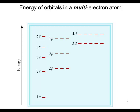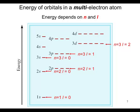The energy of orbitals in a multi-electron problem are different. Here we get splitting of the levels. The energy depends on n and l. The 1s is n equals one, l equals zero. The 2s is n equal two, l equals zero. But 2p is n equal two, l equals one.